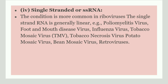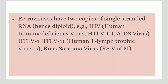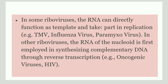Retrovirus has two copies of single-stranded RNA and hence it is diploid. Examples of retroviruses include HIV, that is human immunodeficiency virus. In some riboviruses, the RNA itself serves as the template and takes part in replication — for example, TMV and influenza virus. But in some other viruses, the RNA is involved in the synthesis of complementary DNA through reverse transcription. Examples of such viruses include oncogenic viruses and HIV.